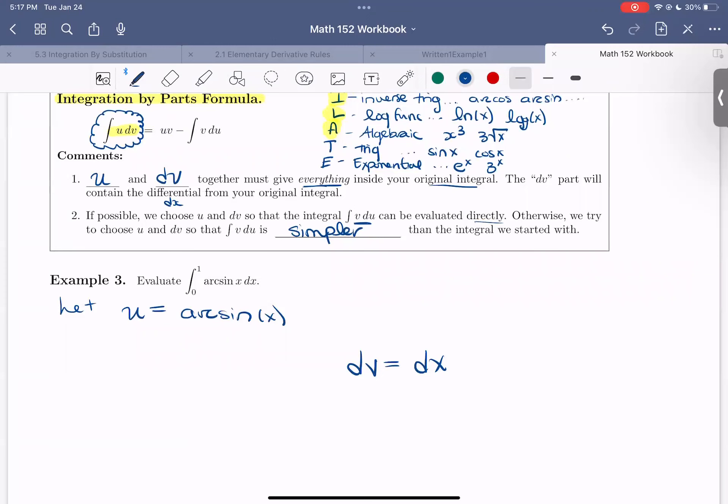So then what is the derivative of arc sine? Well, if you recall some of your calc 1 days, we found that the derivative of arc sine is 1 over the square root of 1 minus x squared dx. And then v, the antiderivative of dx, would just be x, because the derivative of x is dx.